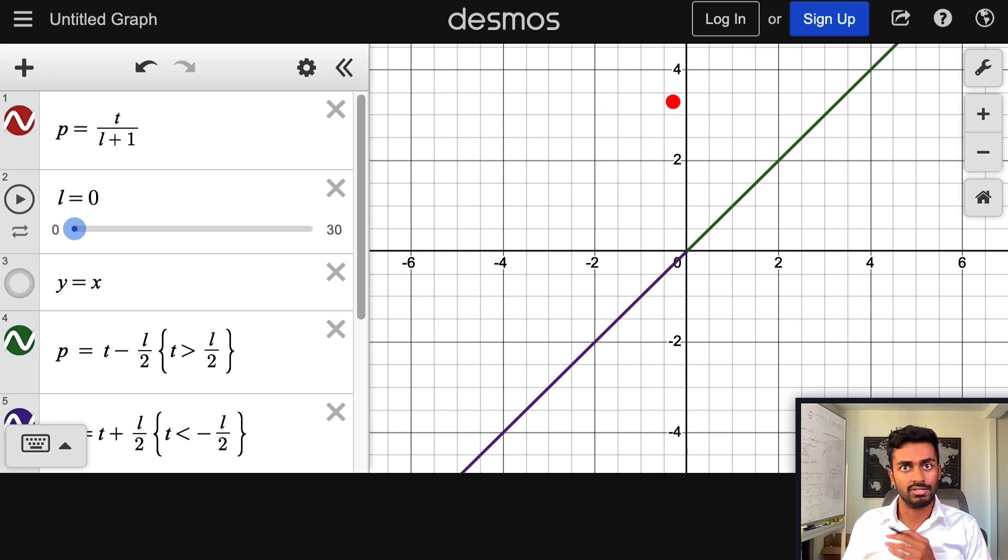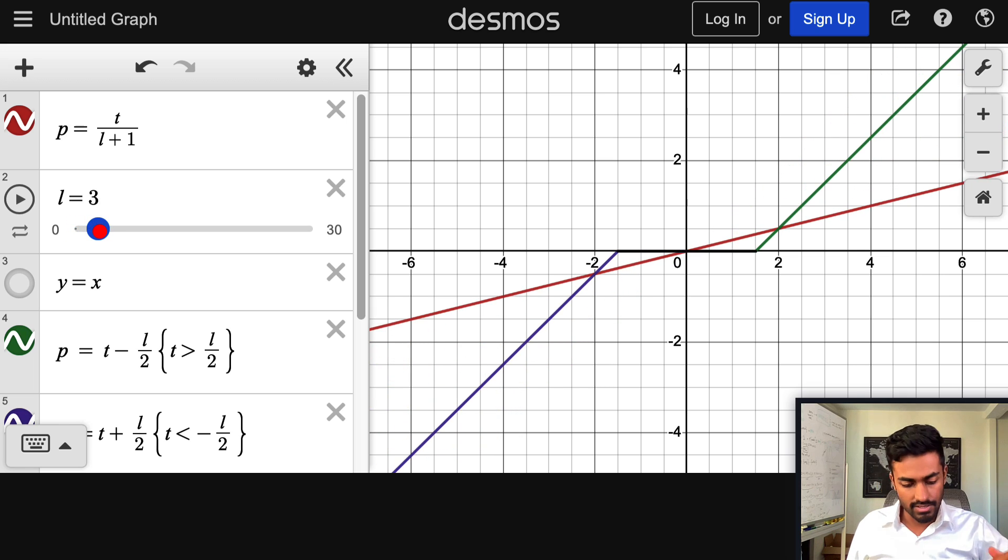Now when lambda is equal to zero the y term is going to be equal to the coefficient itself and this is the residual sum of squares estimate as well. So there is no kind of regularization that's going on when lambda is equal to zero. But as lambda increases you'll actually notice something here.